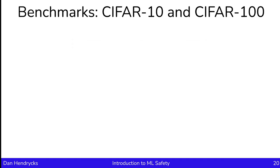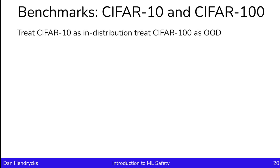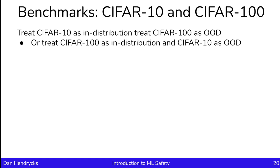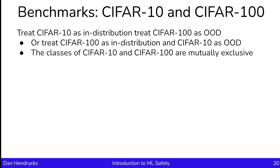Let's discuss some datasets used for assessing the performance of anomaly detectors. One idea is to use research datasets that are lying around. We could use CIFAR-10 and CIFAR-100—treat CIFAR-10 as in-distribution and CIFAR-100 as out-of-distribution, or vice versa. This is possible because the classes of CIFAR-10 and CIFAR-100 are mutually exclusive. We can then train a CIFAR-10 classifier and show it CIFAR-100 examples, hoping the CIFAR-100 anomaly scores are higher than the CIFAR-10 test example scores.